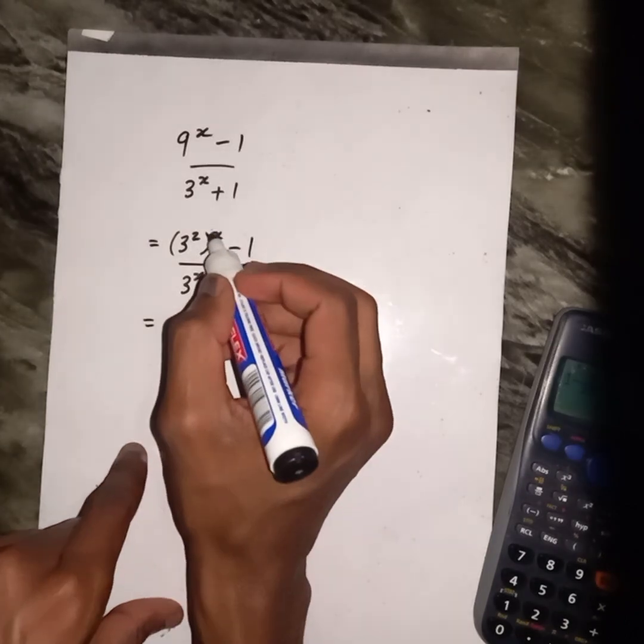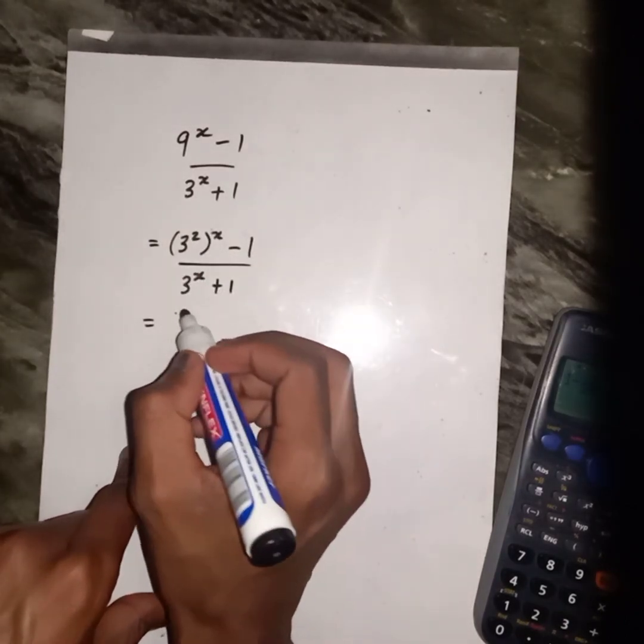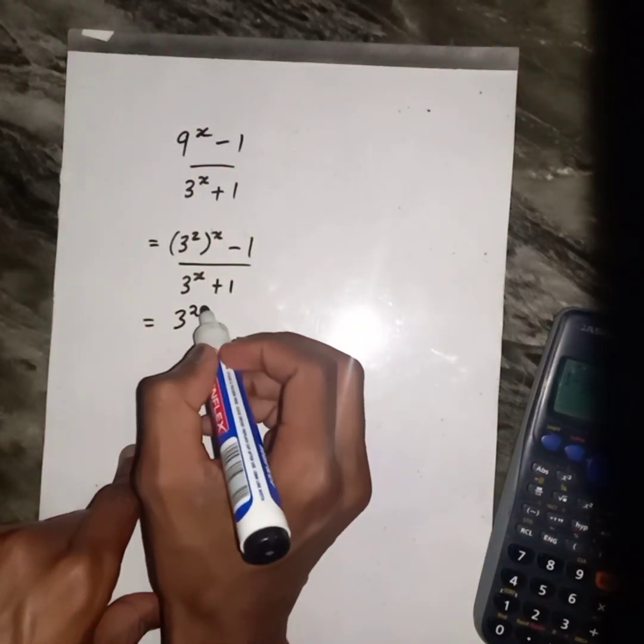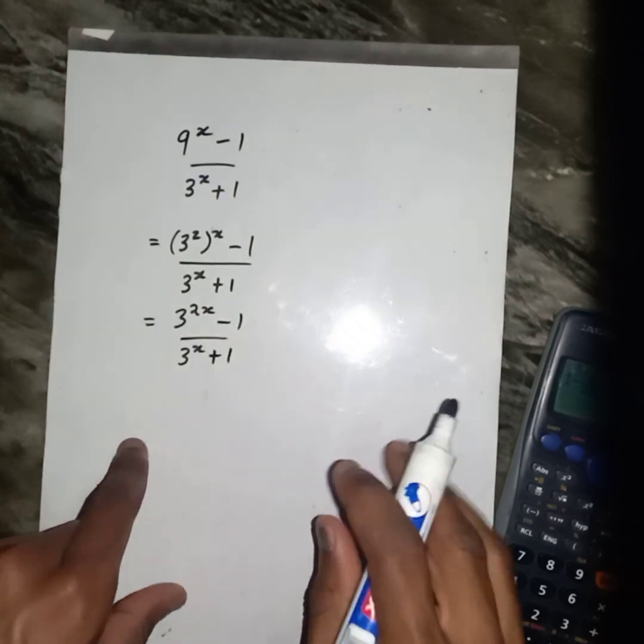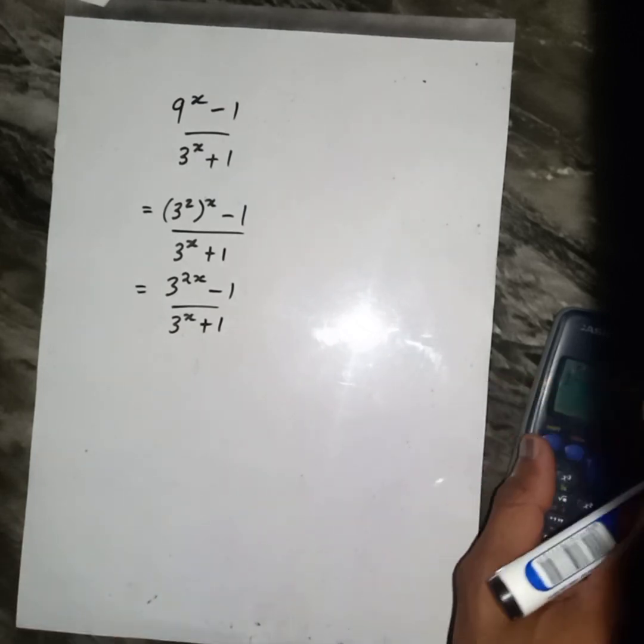So simple. When I multiply this, I'm going to get 3, 2x minus 1, 3^x plus 1. Then check this.